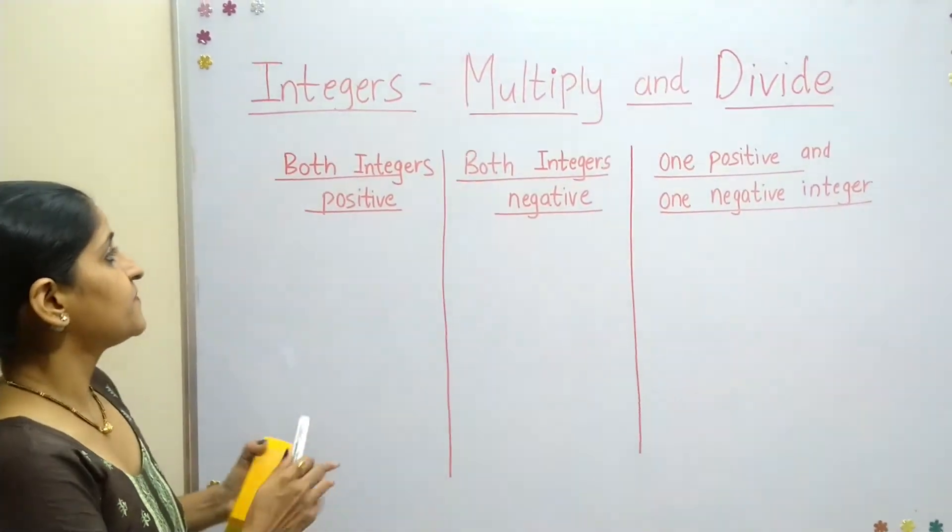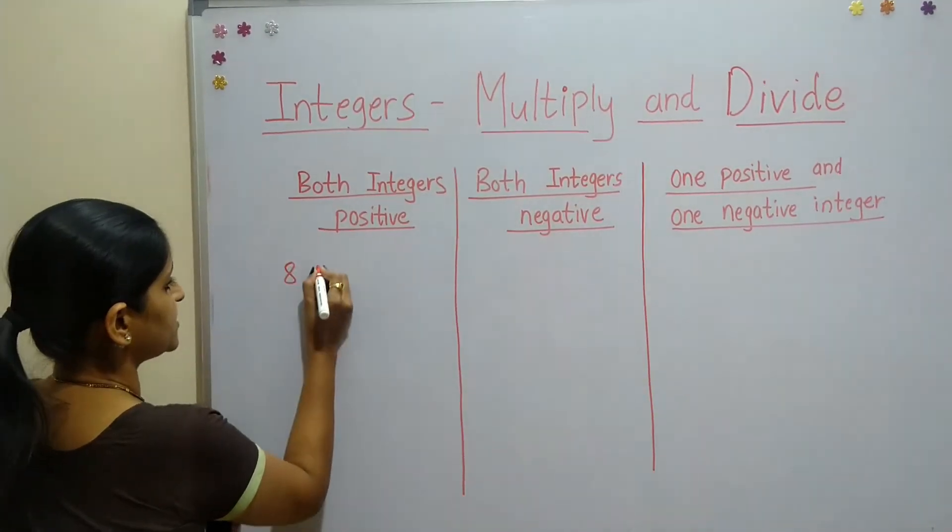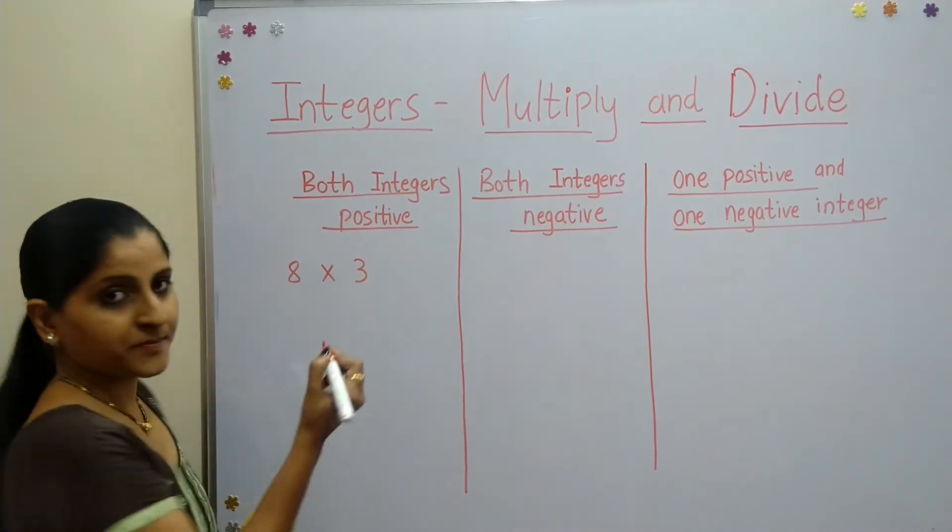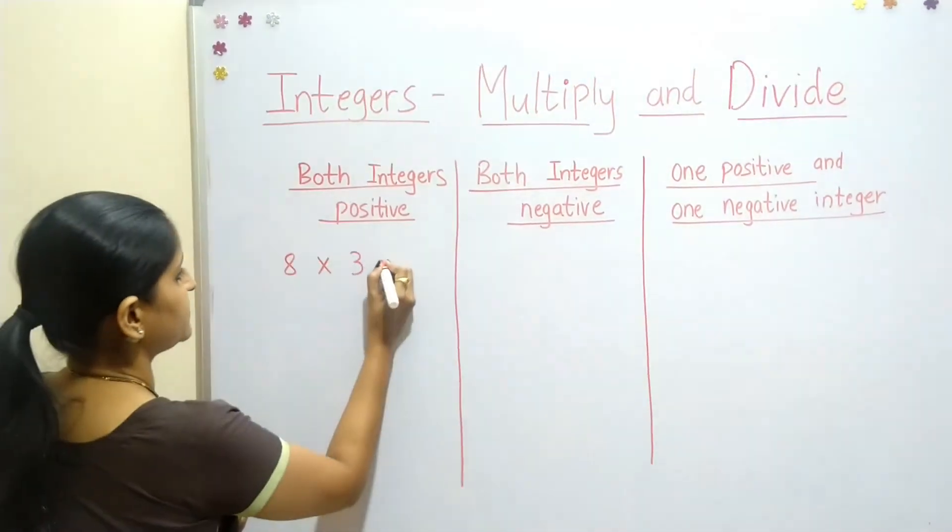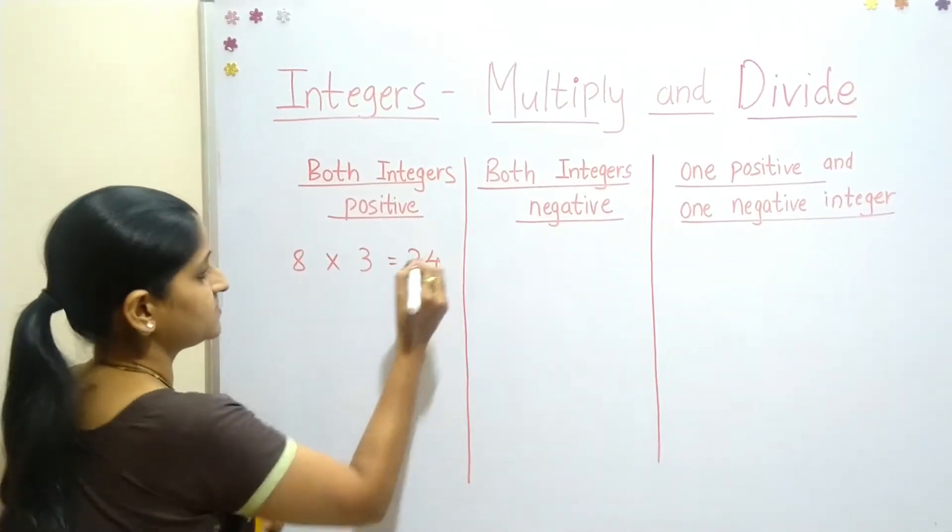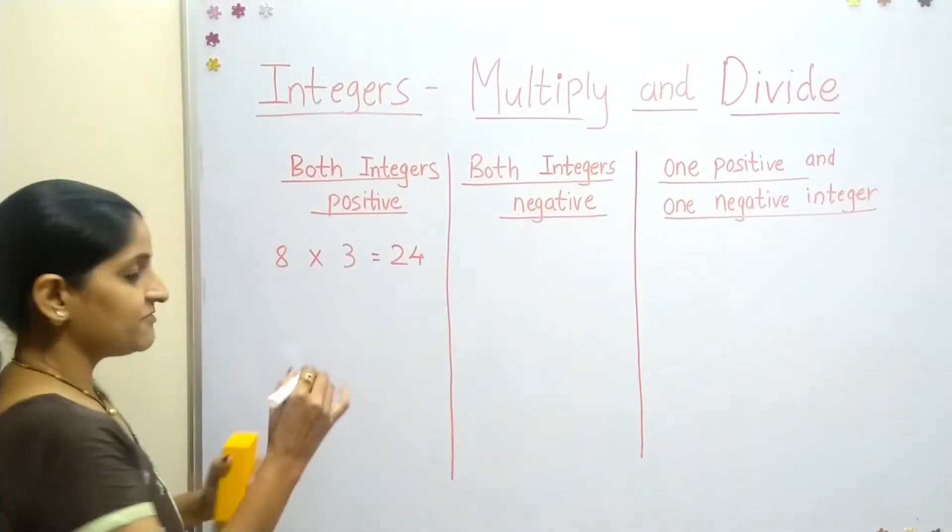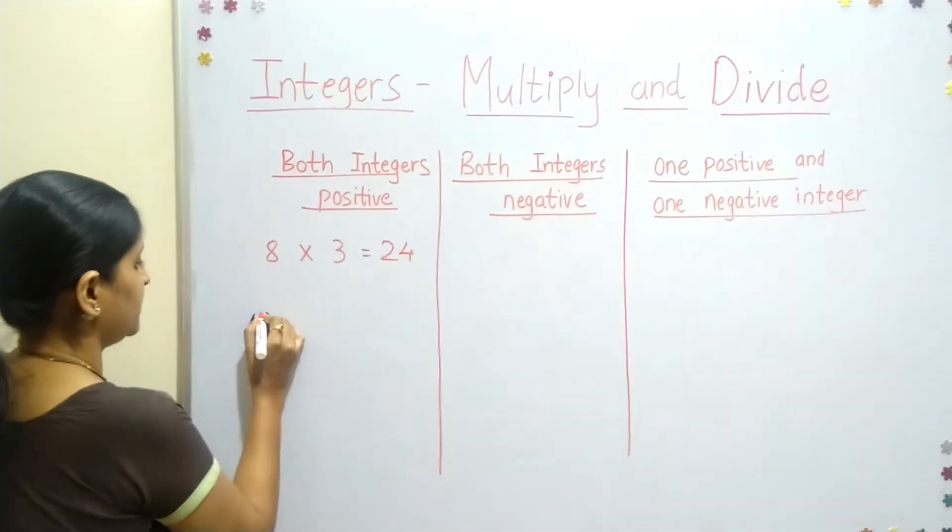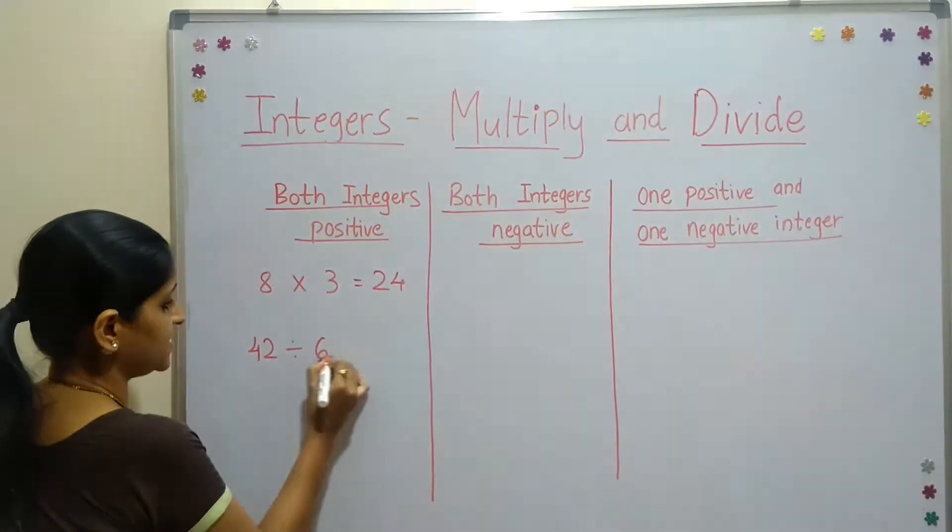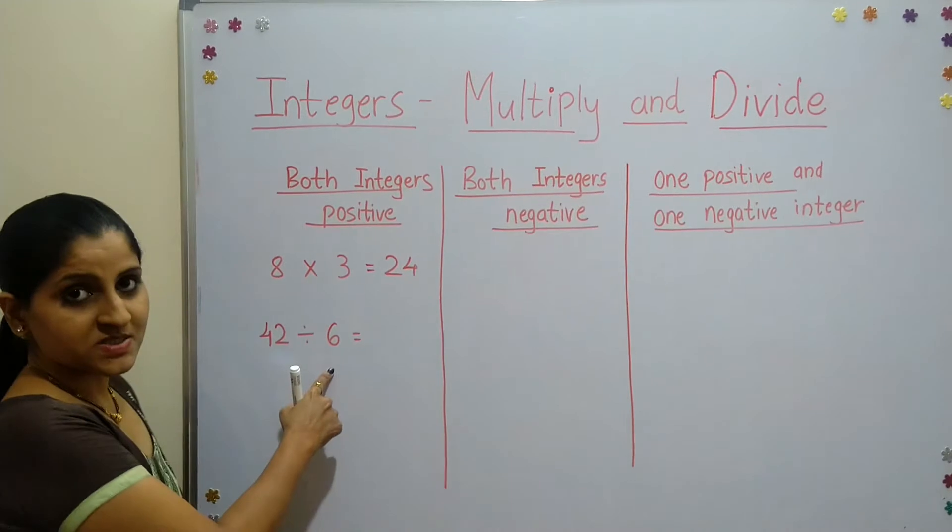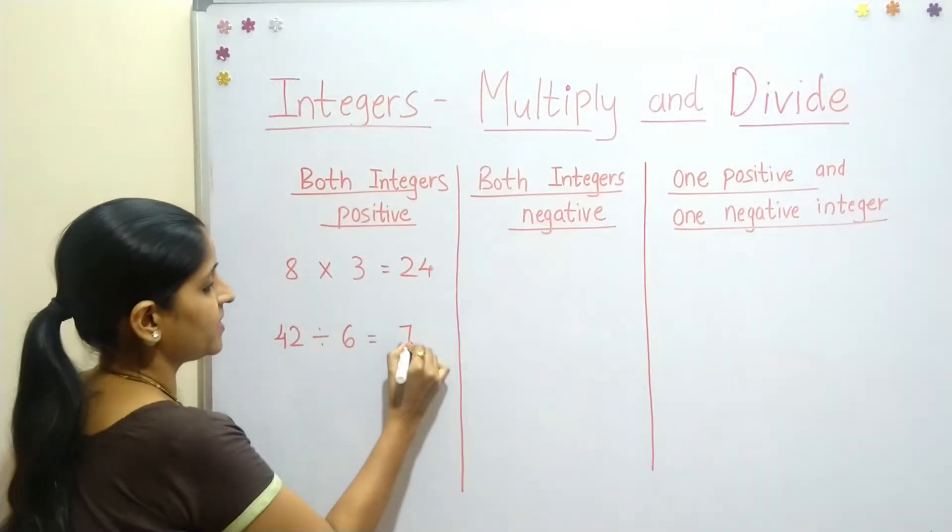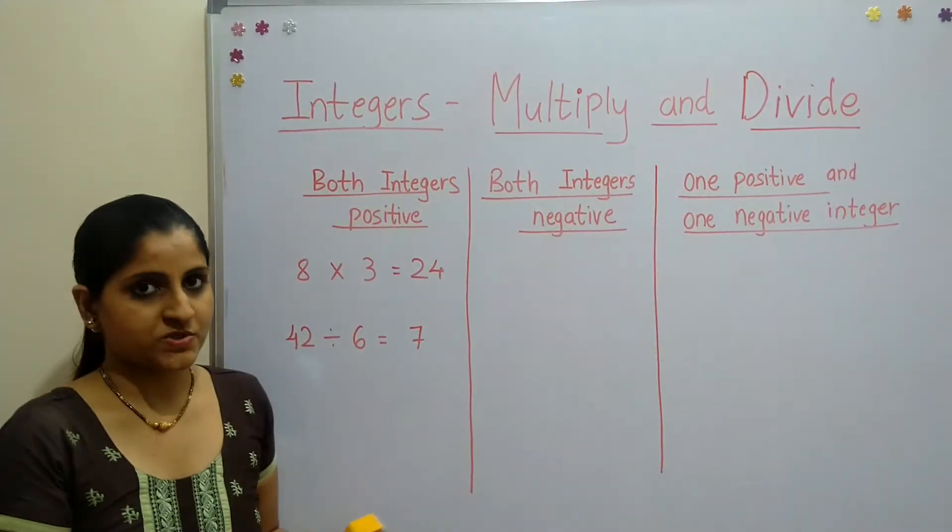Let's start with the first case. If I take two positive integers, 8 multiplied by 3, we know the answer is positive 24. Similarly, if I divide 42 by 6, both numbers are positive, so my answer is also positive.